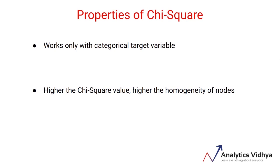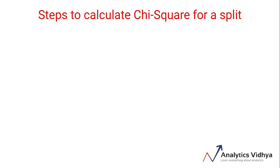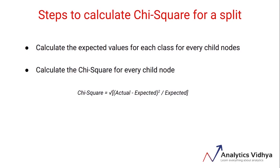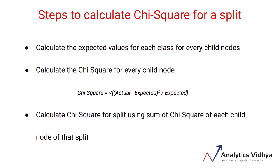Let's now understand the steps to calculate chi-square for a split. First, we need to calculate the expected values for each class. Then we calculate the chi-square for individual nodes using the formula we've seen before, where 'actual' is what we have as the output and 'expected' is what we've calculated. Finally, we calculate the chi-square for the split using the sum of chi-square values of each child node. I'll show you an example to make this extremely clear.